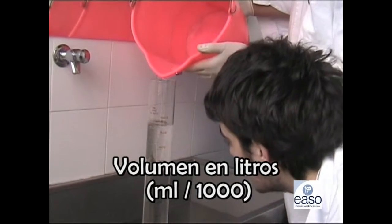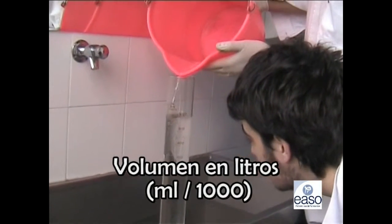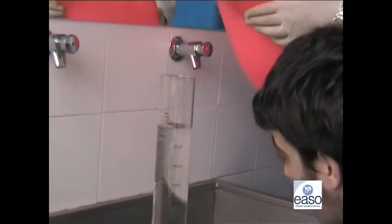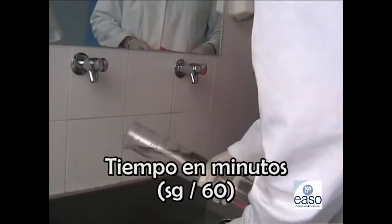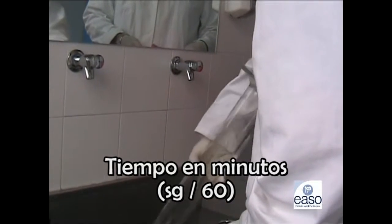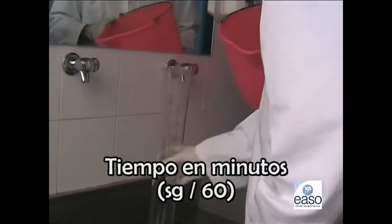Para calcular el caudal de vertido, necesitaremos también el tiempo invertido en la descarga del pulsador. Este tiempo lo expresaremos en minutos, de tal forma que los segundos medidos los dividiremos en 360, y así tendremos el tiempo en minutos.